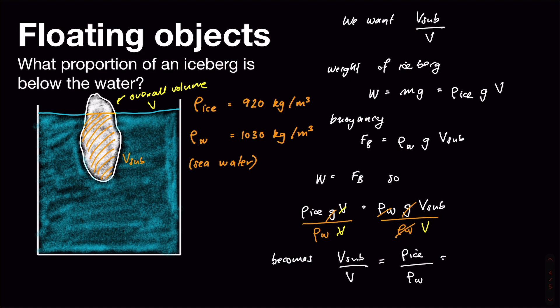So that's equal to 920 kilograms per cubic meter over 1030, which if you do the calculation is about 0.89 or 89 percent. And you've probably heard this before, so basically 90 percent of an iceberg is below the surface, there's a little bit sticking out the top, and our idea of buoyancy lets us actually understand this, do some calculations with it.